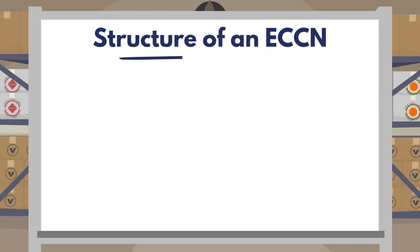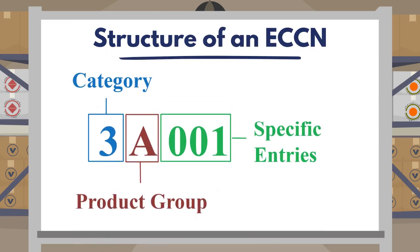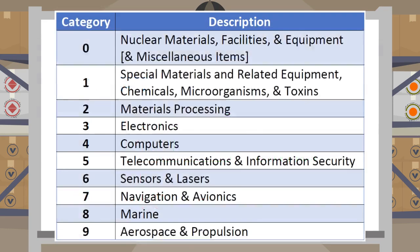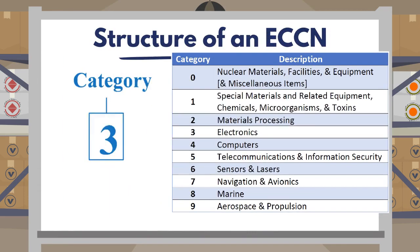An ECCN is a five-character alphanumeric code. The first character is a number from 0 through 9, which stands for one of the ten broad categories in the Commerce Control List.